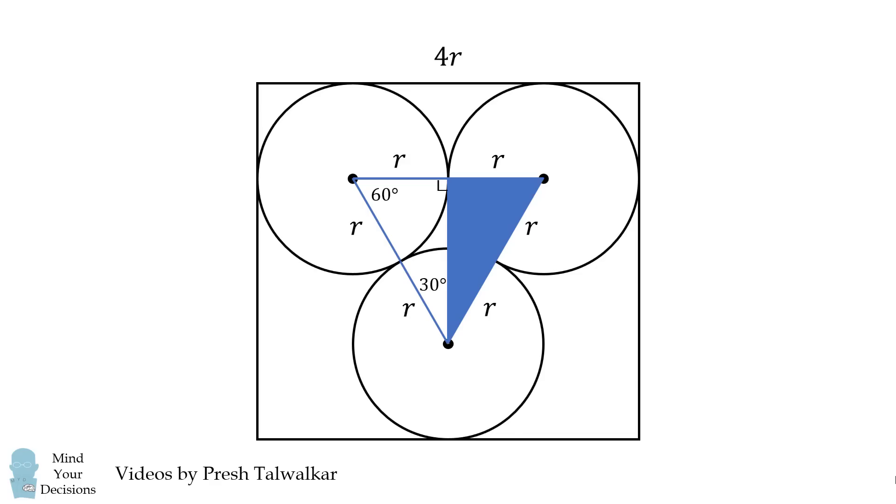This is a special right triangle. The side opposite 30 degrees is r, so the side opposite 60 degrees will be r times the square root of 3. You could have also solved that using the Pythagorean theorem. This means this vertical length will be r times the square root of 3.